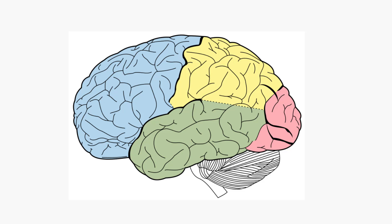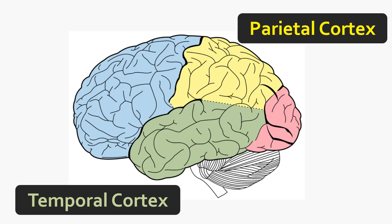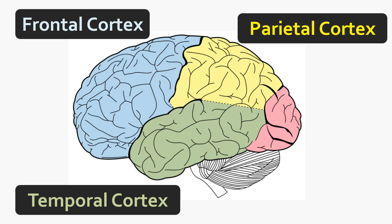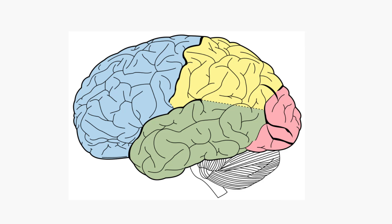Back to the four major lobes. The yellow is the parietal cortex. The green is the temporal cortex — this is like the thumb on a boxer's glove if the brain were a boxer's glove. The blue is the frontal cortex. There are two hemispheres to the human brain, so there is a left and right frontal cortex, a left and right parietal cortex, and so on. Back here is the occipital cortex in pink, towards the back and base of the skull. The additional region down here is the cerebellum, which we'll come on to later.